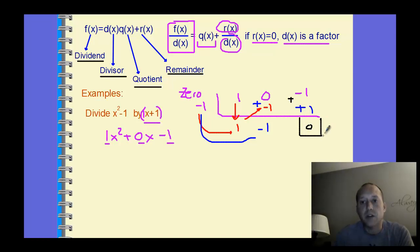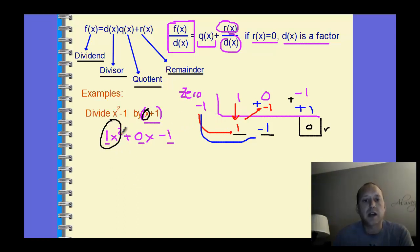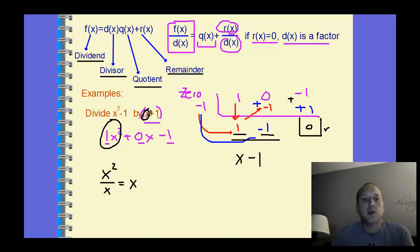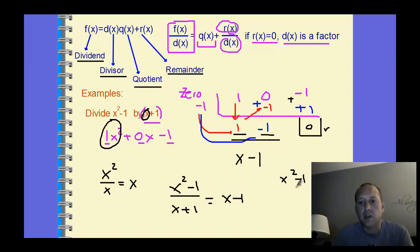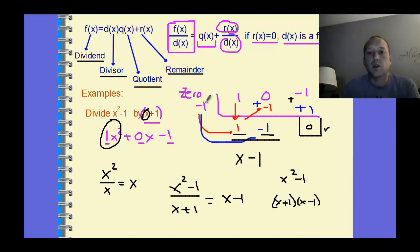Repeating the process: negative 1 times negative 1 is positive 1, and adding gives 0. This last number is always our remainder, so the remainder is 0 — which is what we're hoping for. Working backwards, the next number is the constant, then x, building up by degree. Our result is x minus 1. We divided x squared minus 1 by x plus 1 and got x minus 1, which makes sense because x squared minus 1 factors to x plus 1 times x minus 1.